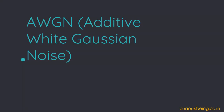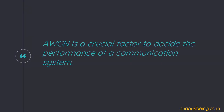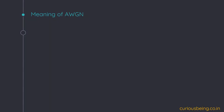What does AWGN mean? AWGN plays a very crucial role in deciding the performance of a communication system. In this video we will try to understand what AWGN exactly means. Let's break down the name AWGN, because AWGN is an abbreviation for Additive White Gaussian Noise. Let's understand what each word means.